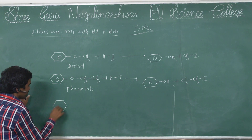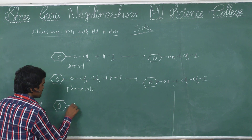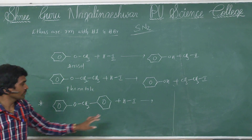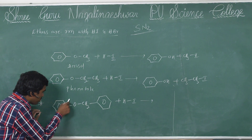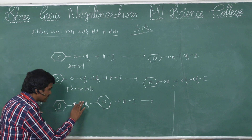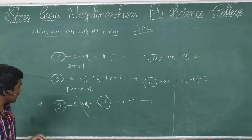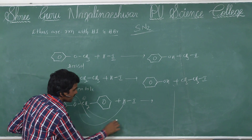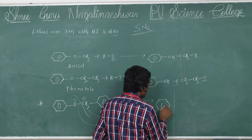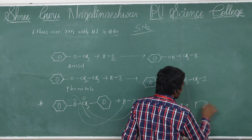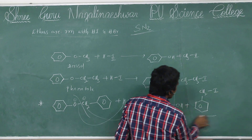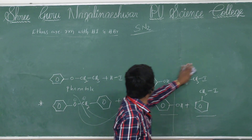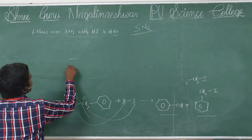Another very very important example — I am giving it a star mark. This compound reacts with HI. Here, the aromatic bond we are unable to break. So formation of phenol plus benzyl iodide — benzyl iodide will be formed. These are very very important reactions.